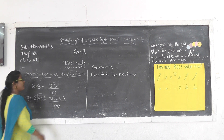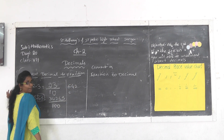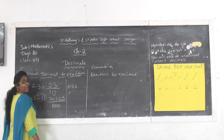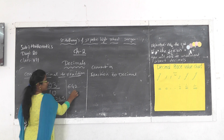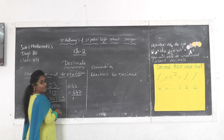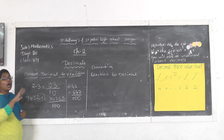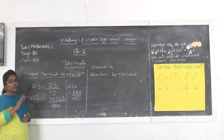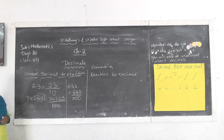Let me take one more example: 6.42. It is a decimal number. After removing the point, write the entire number: 642. After the point, how many numbers are there? 2 numbers, so we write 100 in the denominator. If there are 3 numbers, write 1000. If 4 numbers, write 10000. According to the number of decimal digits, we write that many zeros in the denominator.